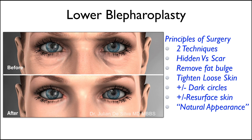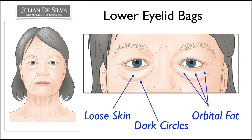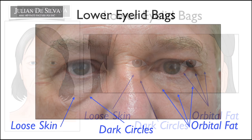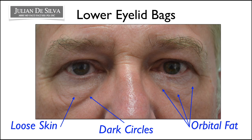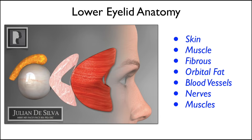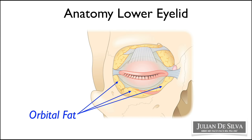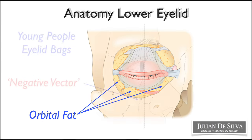The common changes that we see in the lower eyelid with aging include bags, which is essentially orbital fat that's coming forward in the lower eyelid. Often there can be other features such as dark circles beneath the lower eyelid and a component of loose skin. The anatomy of the lower eyelid is very intricate and each person's anatomy is slightly different.